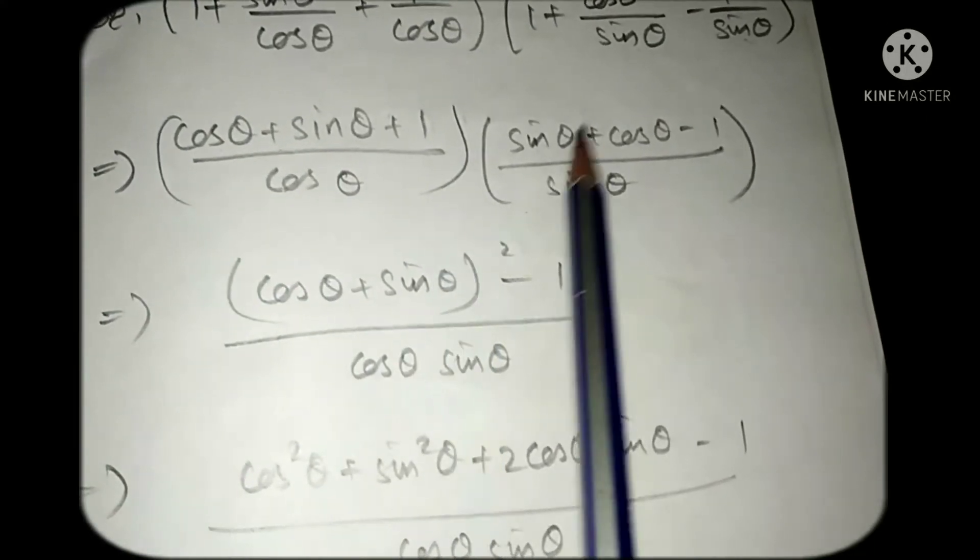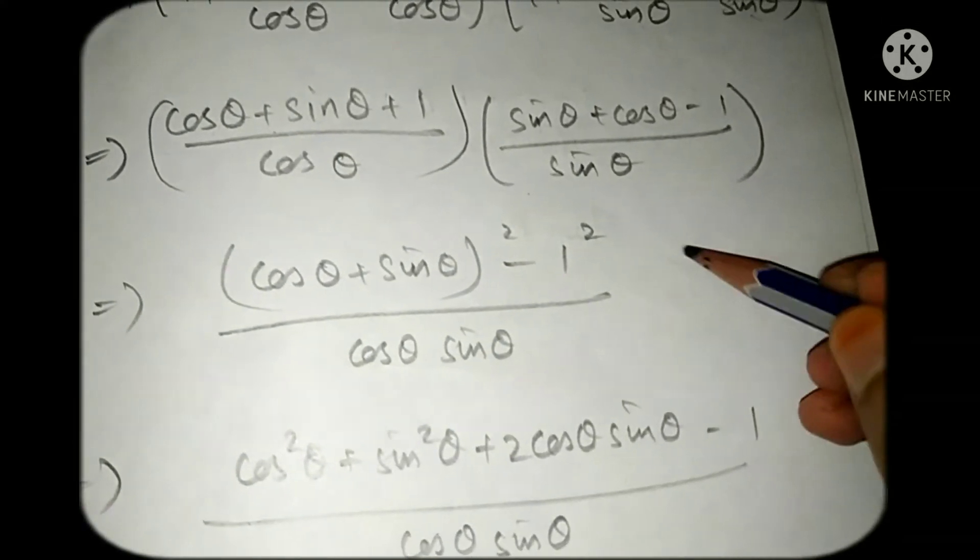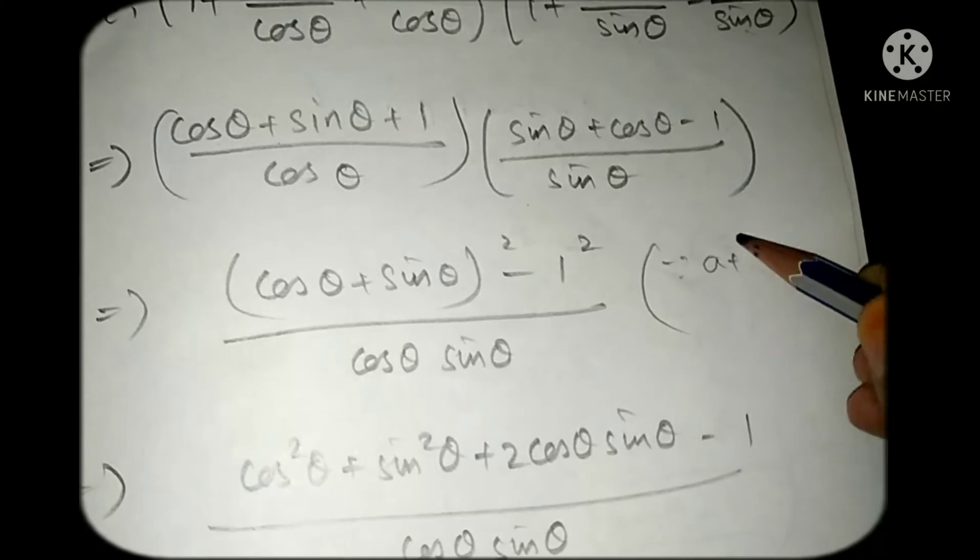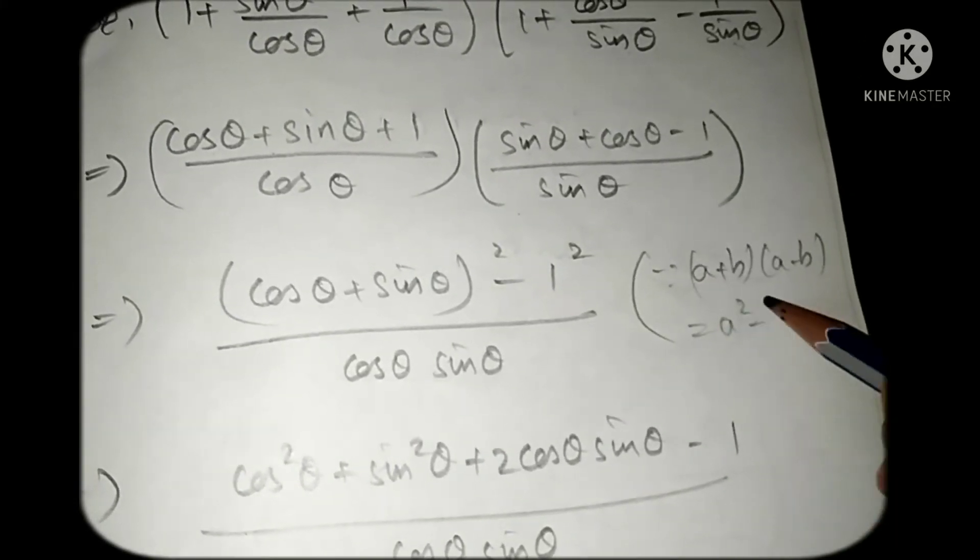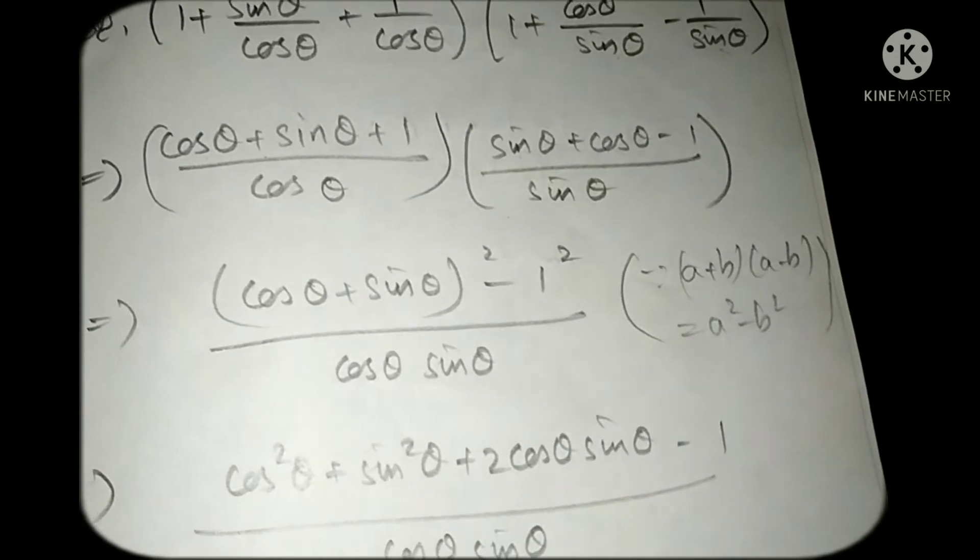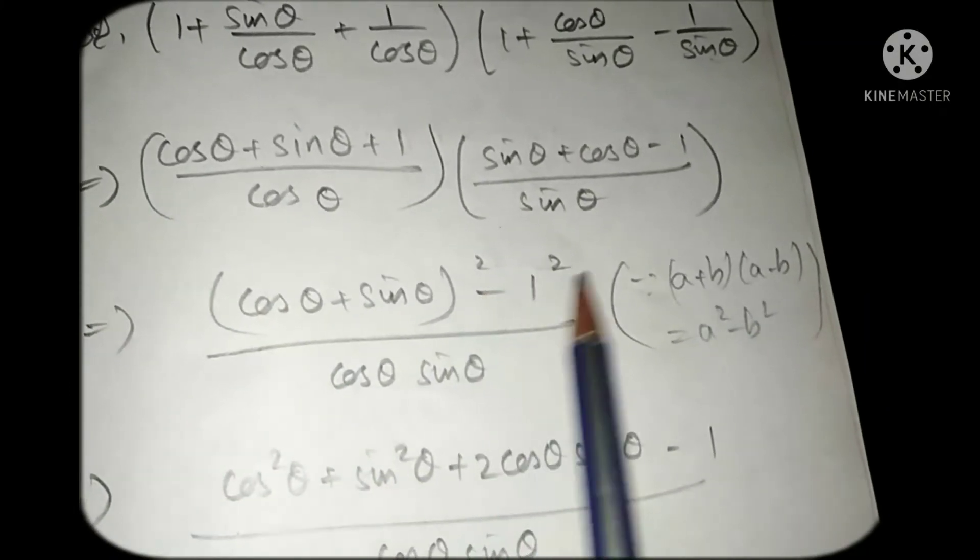Here in the numerator, cos θ + sin θ, so it is in the form of (a + b)(a - b). In the place of a we are having cos θ + sin θ and in the place of b we are having 1. So we can write (cos θ + sin θ)² - 1², denominator as it is.